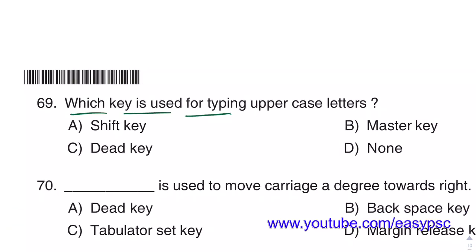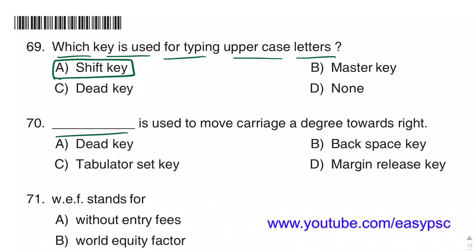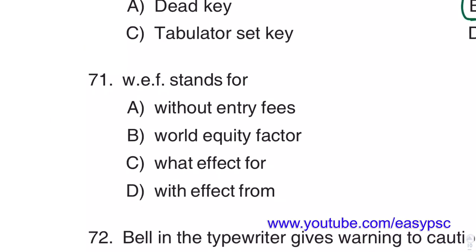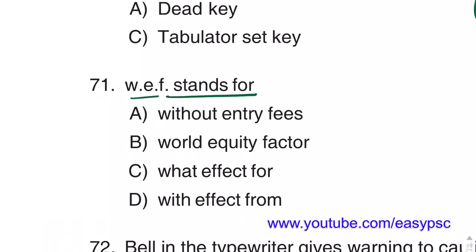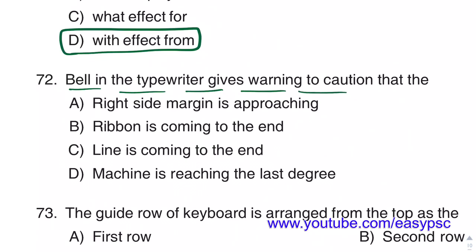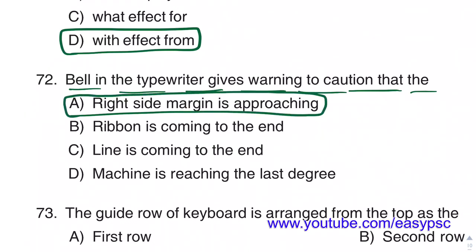The Shift key is used for typing uppercase letters. The Backspace key is used to move the carriage one degree towards the right. WEF stands for With Effect From. The bell in the typewriter gives warning to caution that the right side margin is approaching.